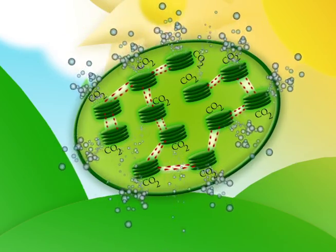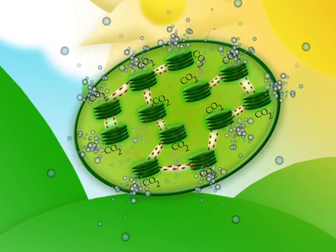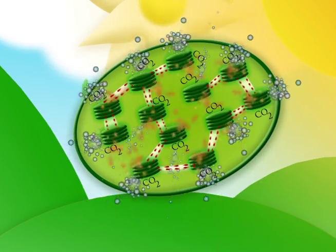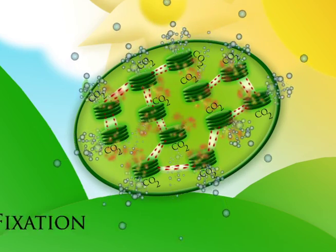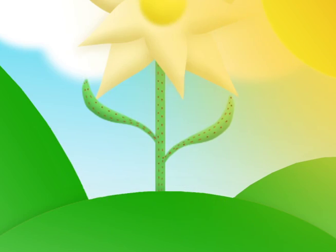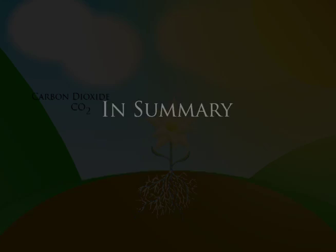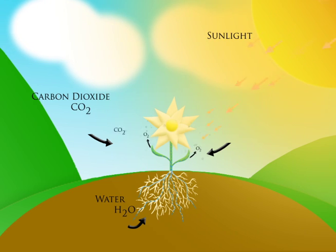In dark reactions, the chemical energy is released where the chemicals are converted into sugar or food for the plant. This process is called carbon fixation. The sugar is then released to the rest of the plant as a source of food. In summary, photosynthesis is a process in plants that creates food for the plant and oxygen for us to breathe.